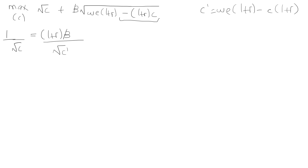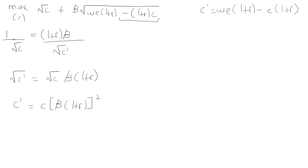We can take square root of c prime and square root of c to the other side, giving us square root of c prime equals square root of c times beta times 1 plus r. Squaring both sides, using basic rules for exponents, gives us c prime equals c times beta times 1 plus r, the whole thing squared. We can split this further: c prime equals c times beta squared times 1 plus r squared.